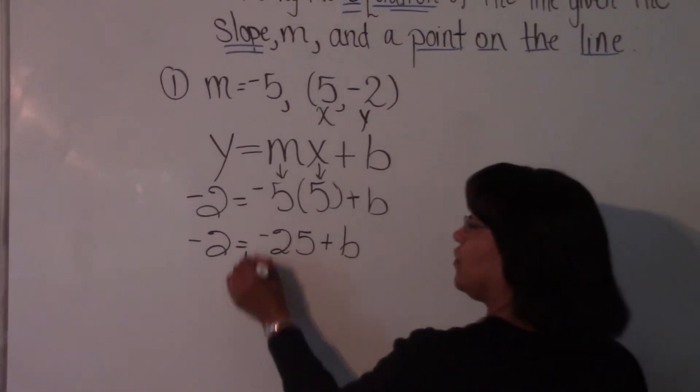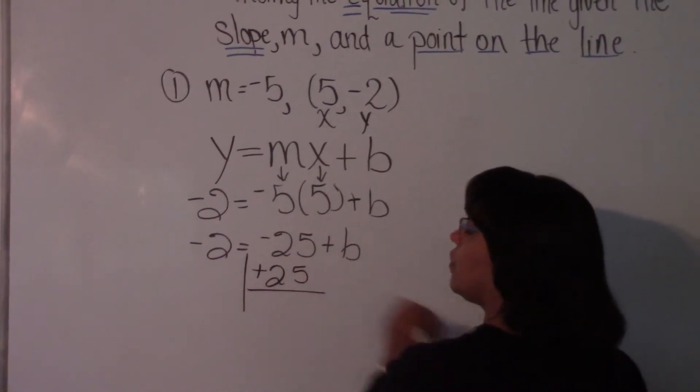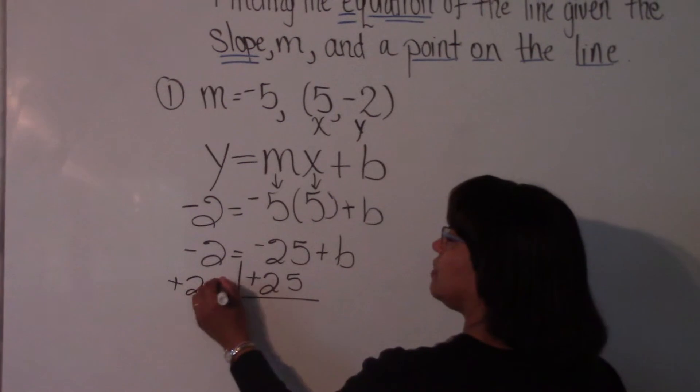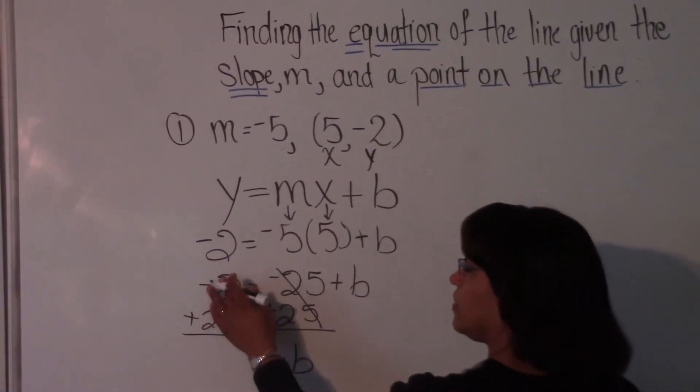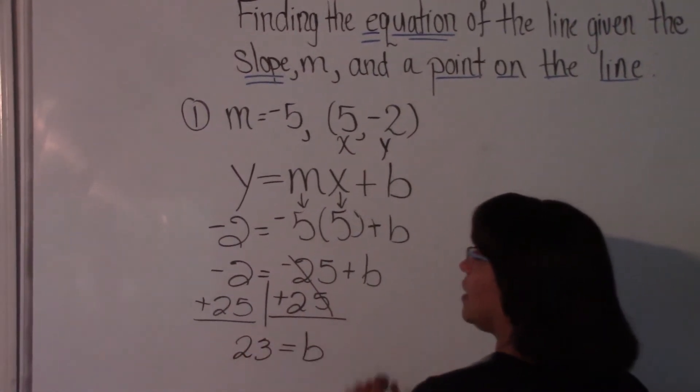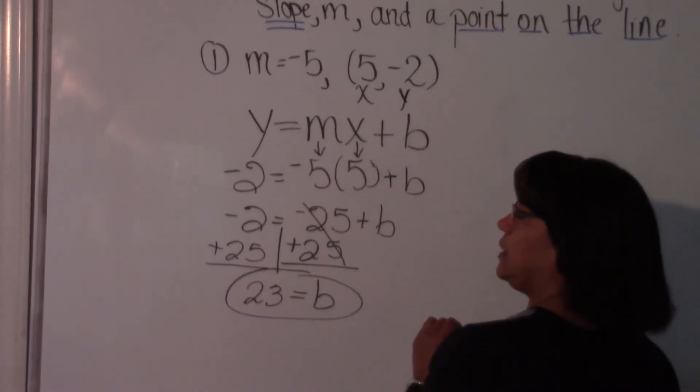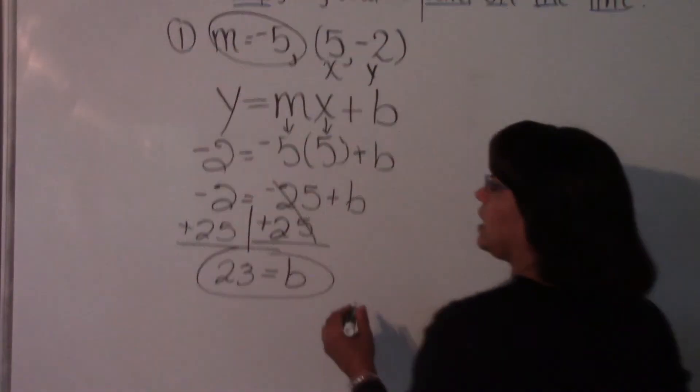But we're solving for b, so we have to do the opposite of minus 25 or negative 25. So we're going to add 25 to both sides of our equation, which is exactly what we want. And we have negative 2 plus 25, which is positive 23.